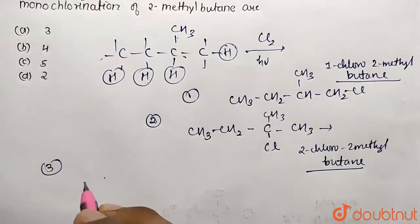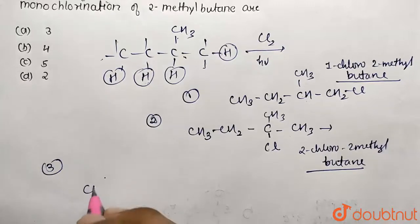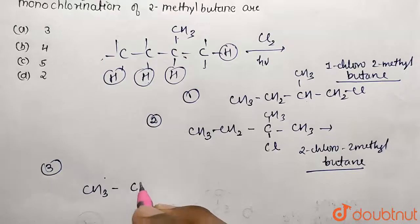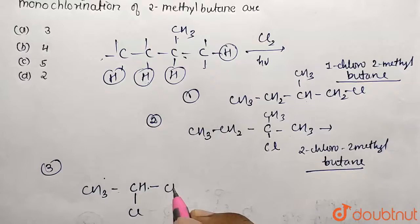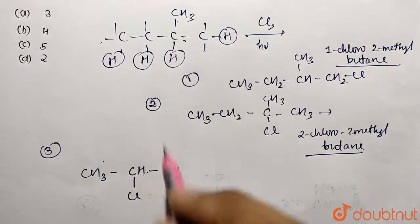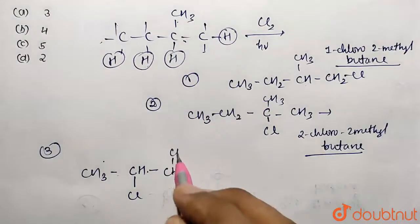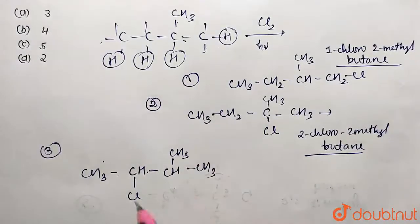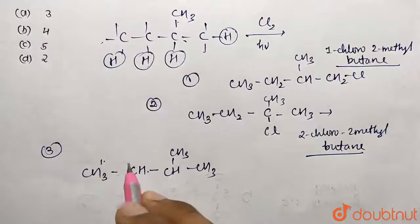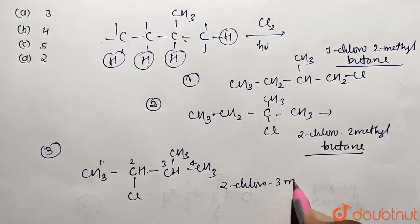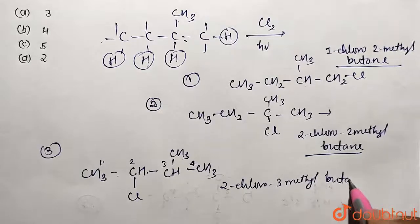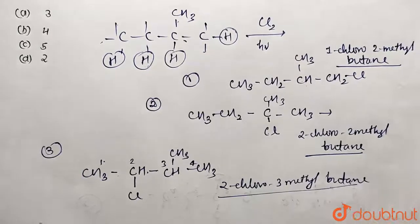For the third product structure: CH3–CH2–CHCl–CH(CH3)–... continuing the chain, we have CH with CH3 groups. Writing out the full molecule and numbering the chain: one, two, three, four — this product is named 2-chloro-3-methylbutane.